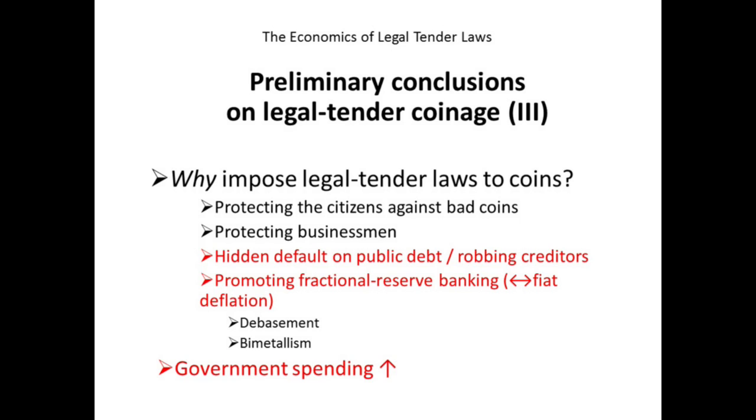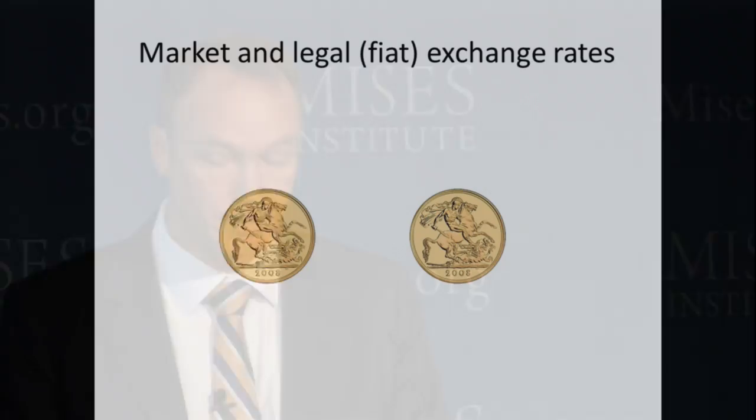So the bottom line is that legal tender laws are instrumental in promoting an increase of government spending. They allow the government to take out more money off the market than the citizens pay in the form of taxes. Now let's turn to the ways in which fractional reserve banking has been promoted more directly through legal tender laws. The basic scenario is the following: we have an initial coin system in which exchange rates are defined by weights, and now we have fractional reserve banks issuing notes.